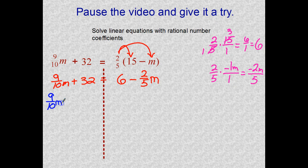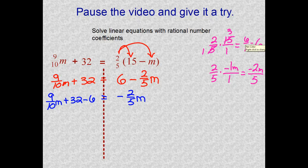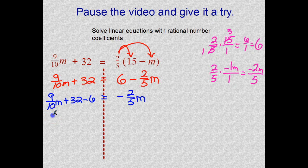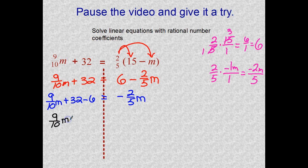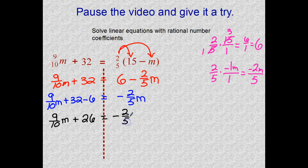Nine tenths M plus 32. If I take a positive six from the right and bring it to the left, I change its sign to negative six. And then I'm just left with this fraction coefficient. Put those together. Nine tenths M. 32 minus six is 26 positive. And I didn't do anything with this one.